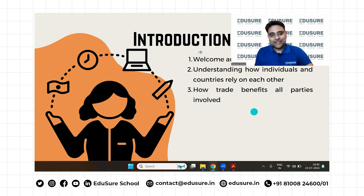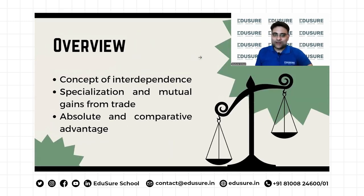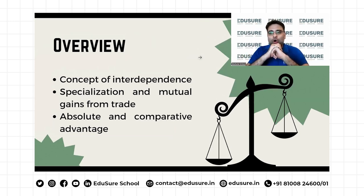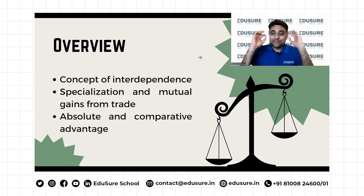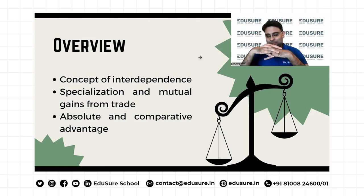So let's understand how interdependence helps one another. It's very rare to find individuals who can satisfy all their wants on their own. The first option would be to be economically self-sufficient, and the second is to specialize in the production of one thing and to trade with others. These are the only two options. With very rare exceptions, individuals and nations tend to rely on specialization and trade.